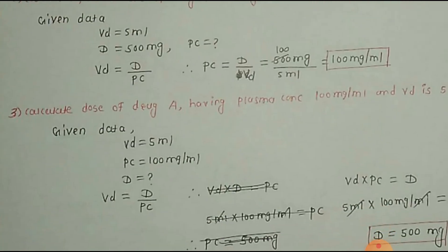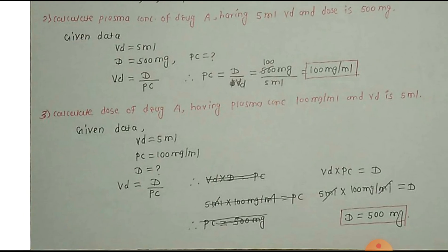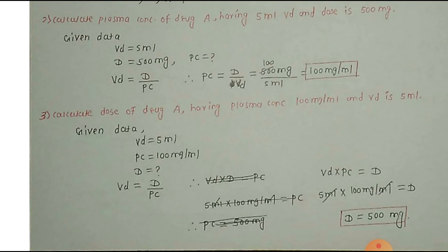Calculate dose of drug A having plasma concentration of 100mg per ml and Volume of Distribution is 5ml. Okay. Given data, Volume of Distribution is 5ml. Plasma concentration is 100mg per ml. And dose which we have to calculate.